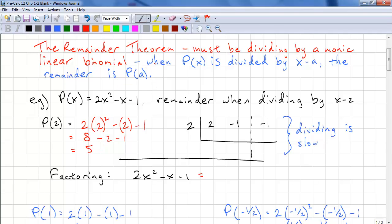So let's use synthetic division and see what that looks like. 2, bring it down. 2 times 2 is 4. 4 minus 1 is 3. 2 times 3 is 6. 6 minus 1 is 5. So we get the same answer, but you can see that dividing is slower than just evaluating.